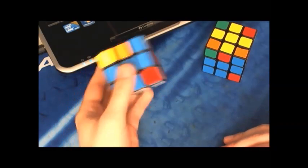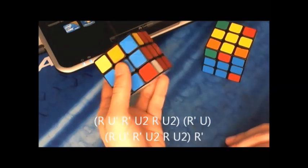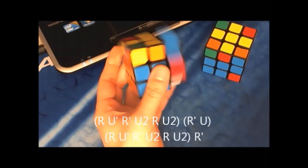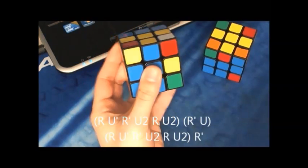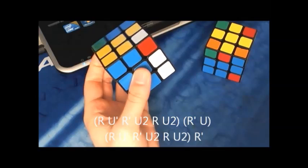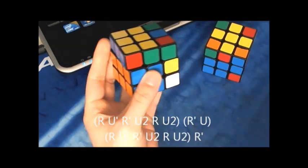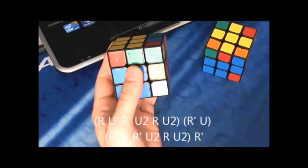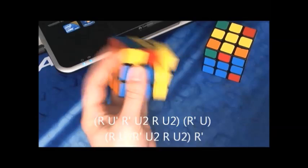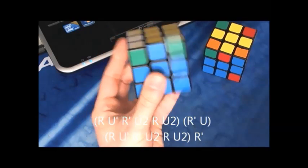So what I start with is this cluster of moves: R, U', R', U2, R, U2. And then the two moves, R', U. And then the first cluster of moves again, so and then finish with an R'.